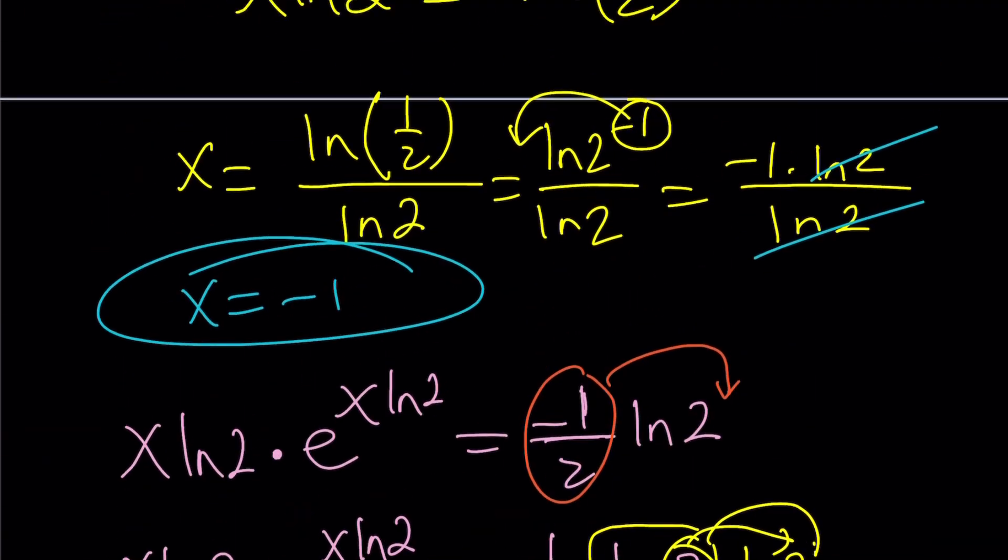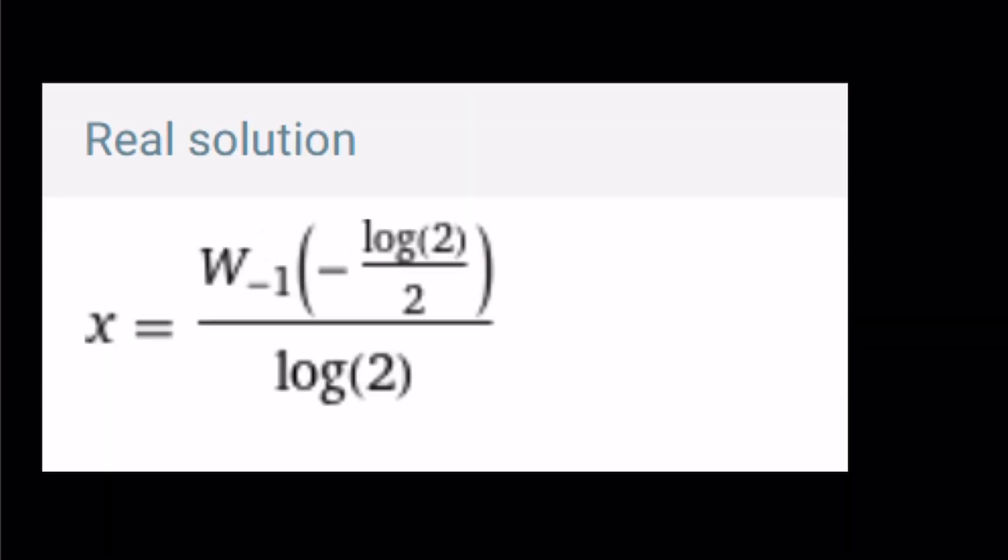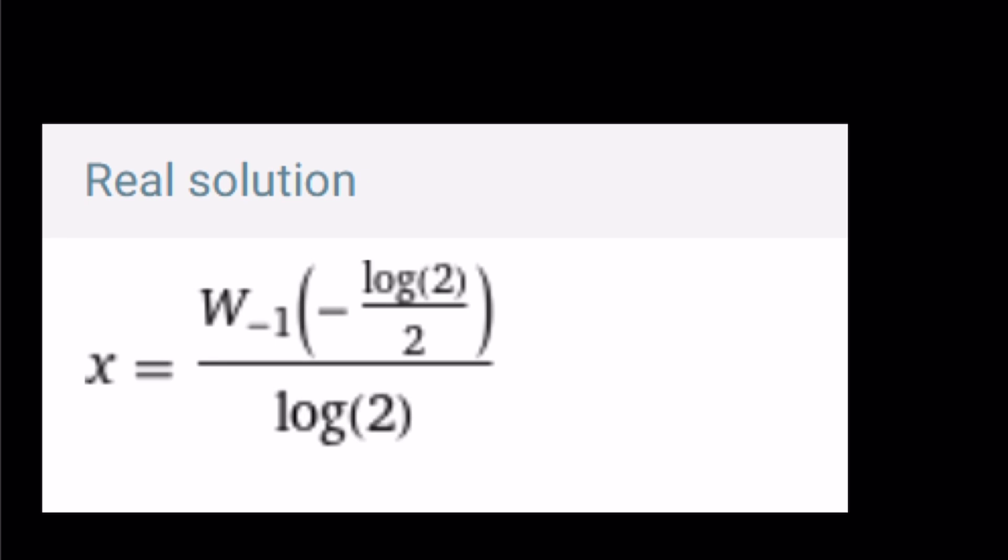What was the first solution? X equals negative 1. So the solution set is negative 1 and negative 2. And here's some results from alpha in the form of Lambert's W function.